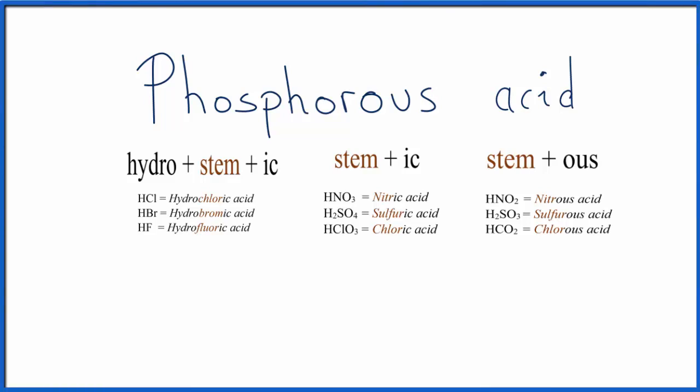To write the formula for phosphorous acid, H3PO3, we use our table here and work backwards to find the formula.